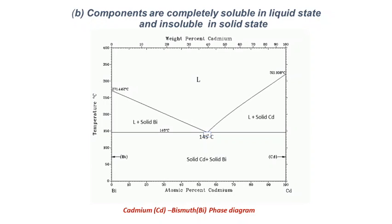If we cool the molten metal directly at this eutectic composition, the liquid cadmium-bismuth material transforms directly to a two-phase solid: solid cadmium plus solid bismuth.